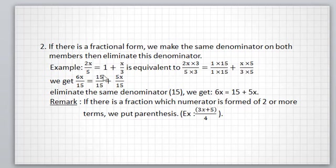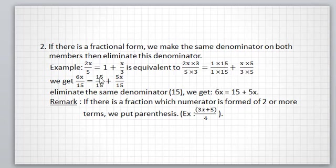Example: if we have the equation 2x over 5 equal to 1 plus x over 3. This equation is equivalent to 2x times 3 over 5 times 3, equal to 1 times 15 over 1 times 15 plus x times 5 over 3 times 5, because we take 15 as a common denominator. Then we get 6x over 15 equal to 15 over 15 plus 5x over 15.